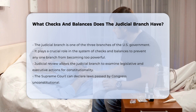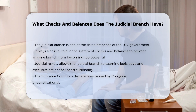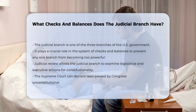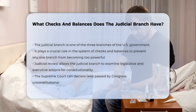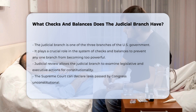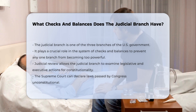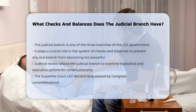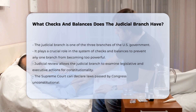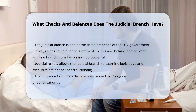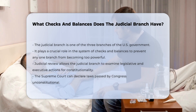Judicial review. The judicial branch has the power of judicial review, which allows it to examine the actions of the legislative and executive branches to ensure they are constitutional. This means the Supreme Court and lower courts can declare laws passed by Congress or actions taken by the executive branch as unconstitutional.